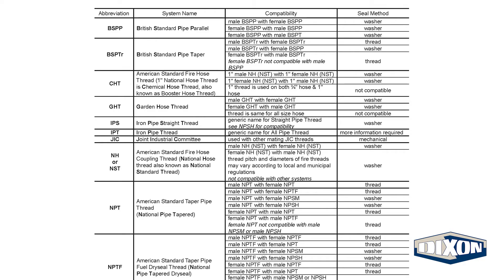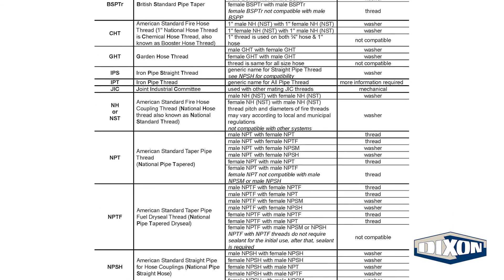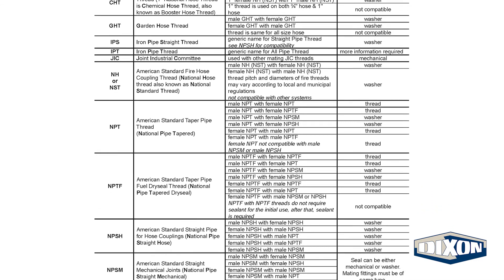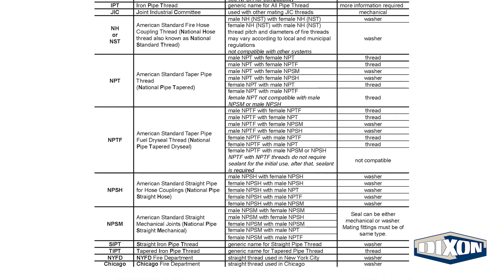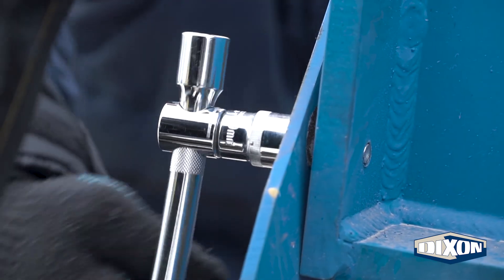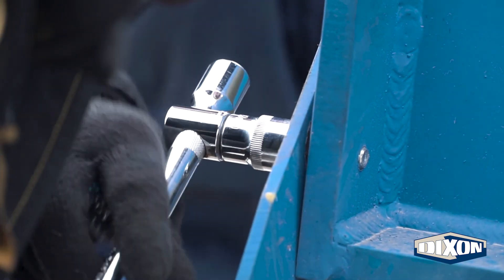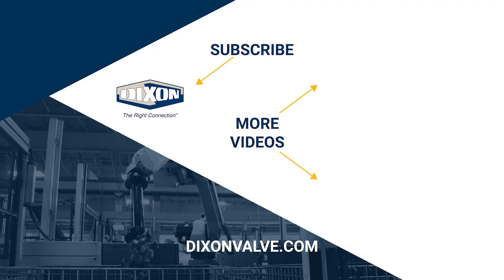Once you know all the details of the threads, you must make sure your fitting makes a compatible connection. The best way to determine which male and female fittings are compatible is to use a compatibility chart. Properly identifying and matching threads is an important practice that can dramatically reduce the odds of an accident. If you have any questions, comments, or concerns, please contact us at DixonValve.com. And don't forget to subscribe to our YouTube channel.